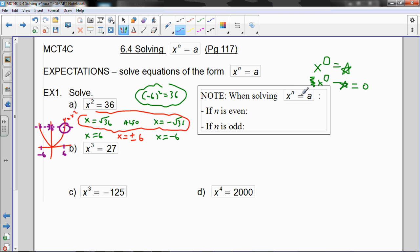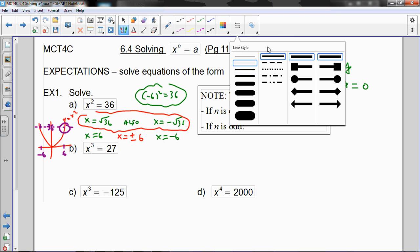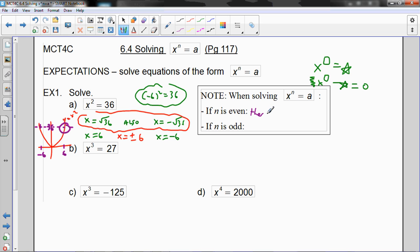So, notice, when I'm solving this, if n is even, there are two solutions. Positive and negative nth root of a. I can just take the root. Now, if n is odd. What happens if n is odd?